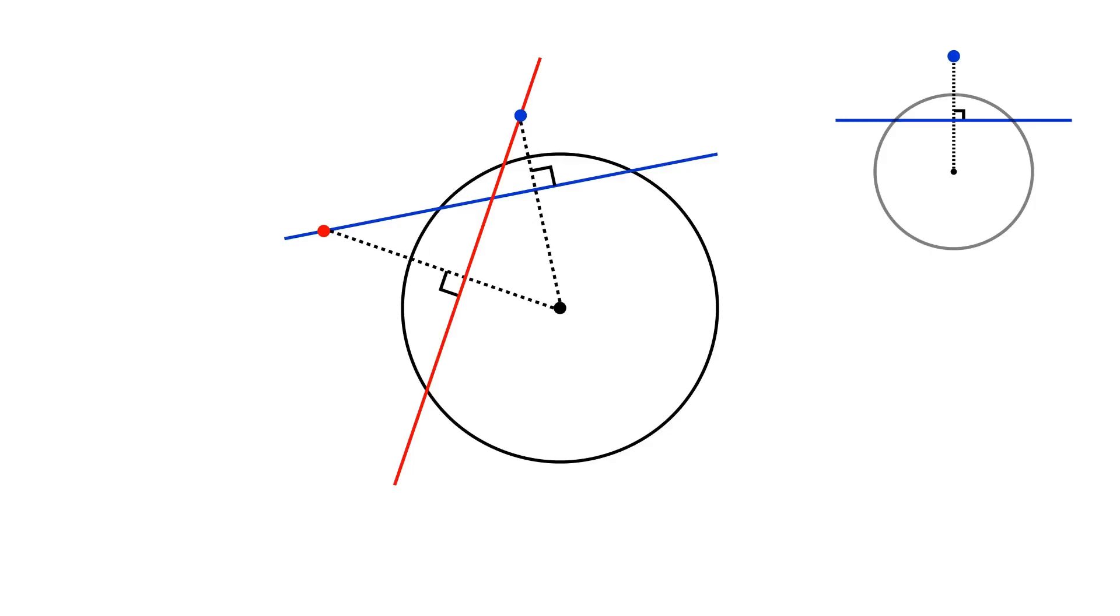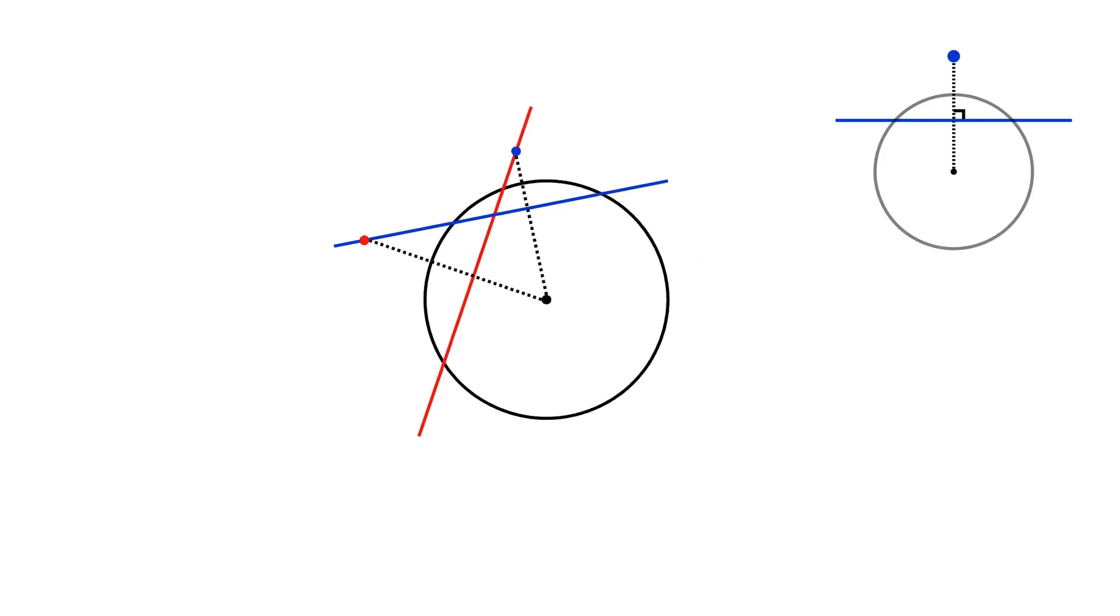Next, just due to the symmetry of the picture, the red line is perpendicular to the ray connecting the center of the circle and the red point. This is almost obvious from our definition of the polar.